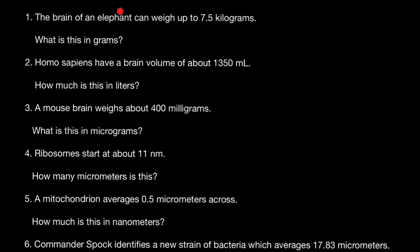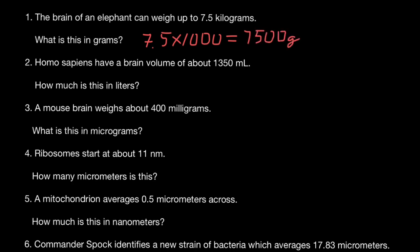The brain of an elephant can weigh up to 7.5 kilograms. What is this weight in grams? In one kilogram there are 1,000 grams. So what we have to do is multiply 7.5 by 1,000. Basically, that means we have to move the decimal point three places to the right. So we are going to get 7,500 grams.